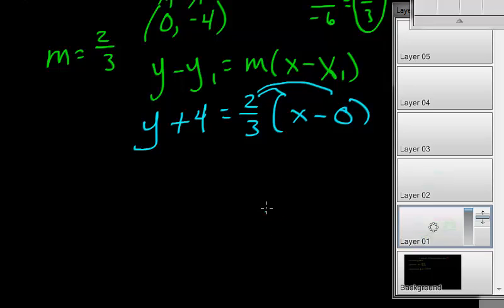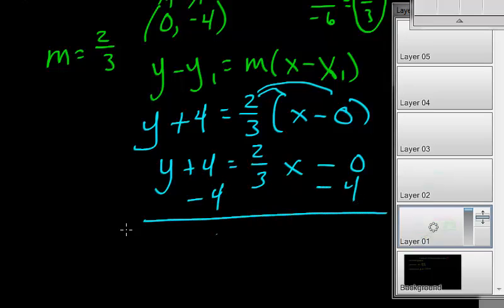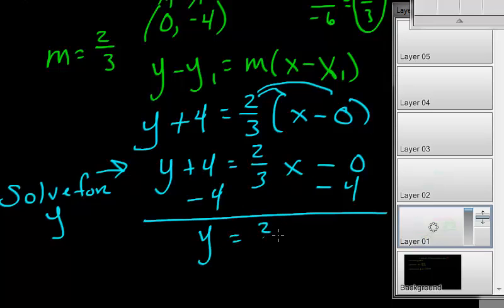So, it's going to be y plus 4 equals 2 thirds x minus 0. And then, I simplify. Solve for y. That's the last thing. I'll write that down right there. Solve for y. When you're at this point. And so, y would equal 2 thirds x minus 4. And that's my final answer.